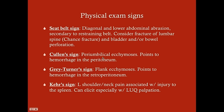Cullen's sign is peri-umbilical ecchymosis and points toward hemorrhage in the peritoneum. Gray-Turner's sign is flank ecchymosis and points to hemorrhage in the retroperitoneum. Kehr's sign is pain in the left shoulder and left neck, and is associated with injury to the spleen. Just having left shoulder/neck pain is not Kehr's sign, but in an abdominal trauma patient — especially when elicited by palpation of the left upper quadrant — a positive Kehr's sign is very strongly associated with splenic injury. Blood around the spleen irritates nerves near the diaphragm, referring pain to the left shoulder and neck.